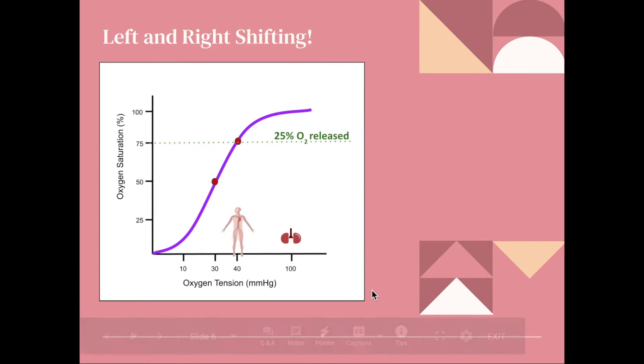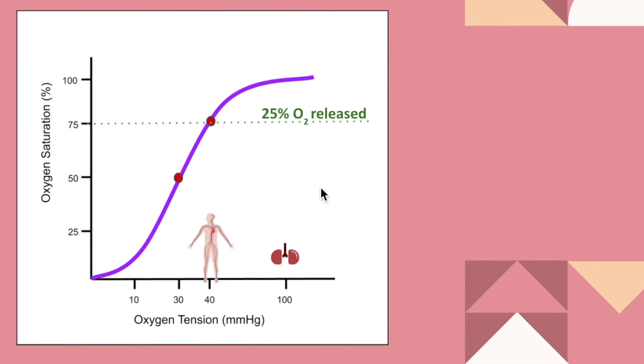So now let's talk about left and right shifting. So we're going to talk about right shifting first. So right shifting, as you can see, the oxygen saturation actually stays the same. But the oxygen tension increases if you look at the dots. So at 50%, oxygen tension actually increased to around higher than 30% originally.